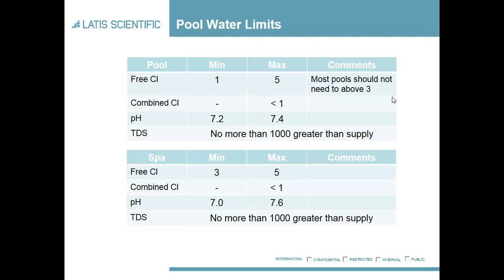Once combined chlorine starts getting higher than one it's obviously a slight concern. The pH levels you want between 7.2 to 7.4. And the total dissolved solids or TDS, you don't want to be more than a thousand greater than the incoming supply. Depending on whereabouts you are in the country that will vary quite significantly, generally being higher in the southeast and lower in the north of England.